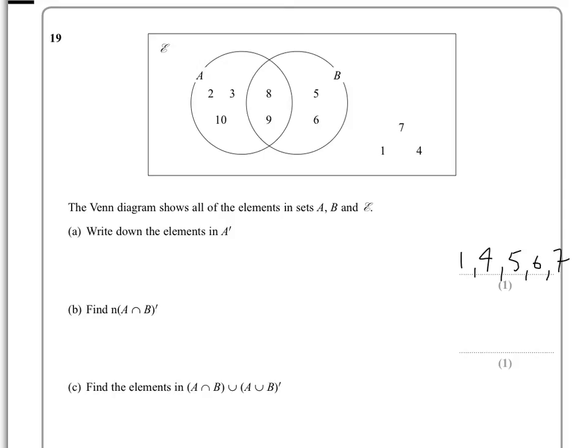But the N over here is essentially denoting the number of, the number that is in that. So what it's saying is it doesn't want you to list the numbers, it wants to know how many. So in the top it said write down the elements or in C it says find the elements. Here it's saying find the number of essentially.